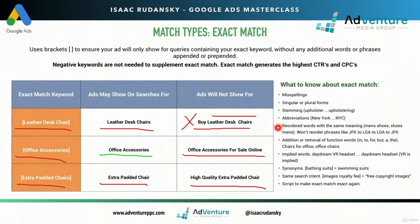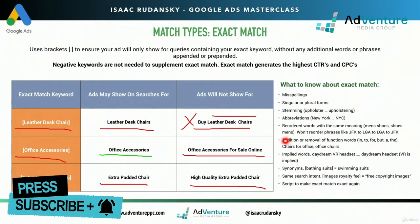Reordered words with the same meaning is an interesting one — Google is extremely vague on how they treat this because it sounds like broad match modified. The key difference is it has to be only these words: no additional words and no missing words. But if the search term has the same exact meaning according to Google, they might trigger your ad. So if my keyword is 'men's shoes' and somebody searches 'shoes men's' and Google cannot differentiate intent between the two, it retains the right to trigger that exact match keyword.